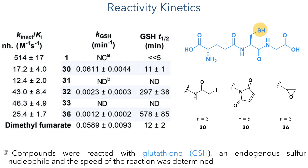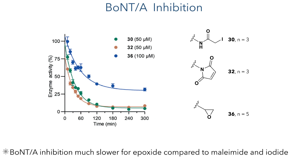The researchers studied reactivity kinetics further by reacting selected compounds with glutathione, an endogenous compound possessing a nucleophilic thiol that mimics the cysteine residue in the BoNT active site. The methane thiosulfonate compound reacted too fast to measure, while dimethyl fumarate as a positive control showed a half-life with glutathione of about 12 minutes. The alpha-iodoamide showed a similar time, while the maleamide had a half-life of almost five hours, and the epoxide compound showed a half-life of almost six hours. These kinetics correlated well with neurotoxin inhibition results, with the iodide showing the strongest inhibition after five hours and the epoxide showing the least.